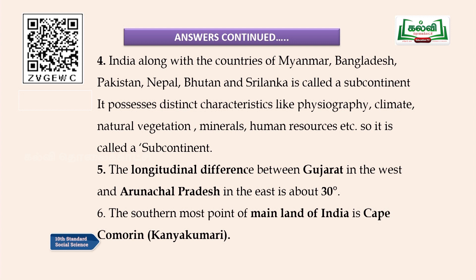The longitudinal difference between Gujarat in the west and Arunachal Pradesh in the east is about 30 degrees longitude. The southernmost point of the mainland of India is Cape Comorin, which is also known as Kanya Kumari.